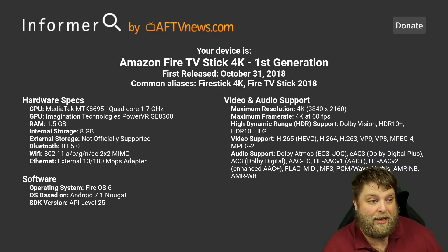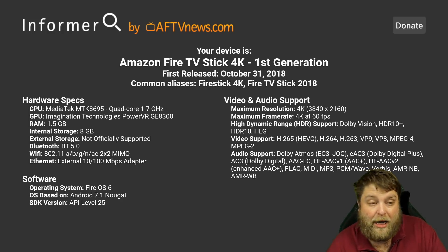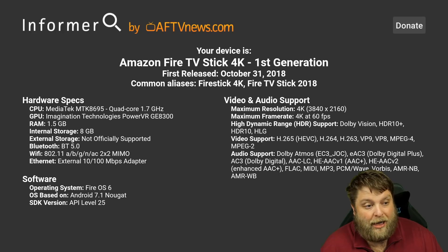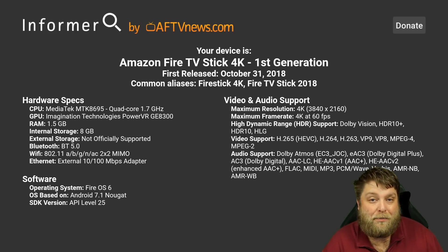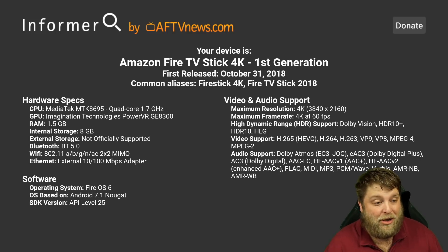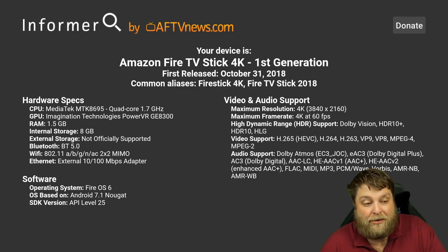What this actually does is it tells you a lot of things about the device you are using. At the moment I'm using the Fire Stick 4K and it's the first generation. It tells you when the device was released, and it also gives you some hardware specs. You can see 1.5 gigabytes of RAM, 8 gigabytes of internal storage. It's not officially supported for external storage, but we do know you can add an OTG and USB devices that way. And when it comes to software, the 4K Fire Stick is running Fire OS 6. So if you want to know what operating system your device is running — whether it's Fire OS 5, 6, or 7 — you can find it out here. It's based on Android 7.1 Nougat. And you can also see video and audio support.